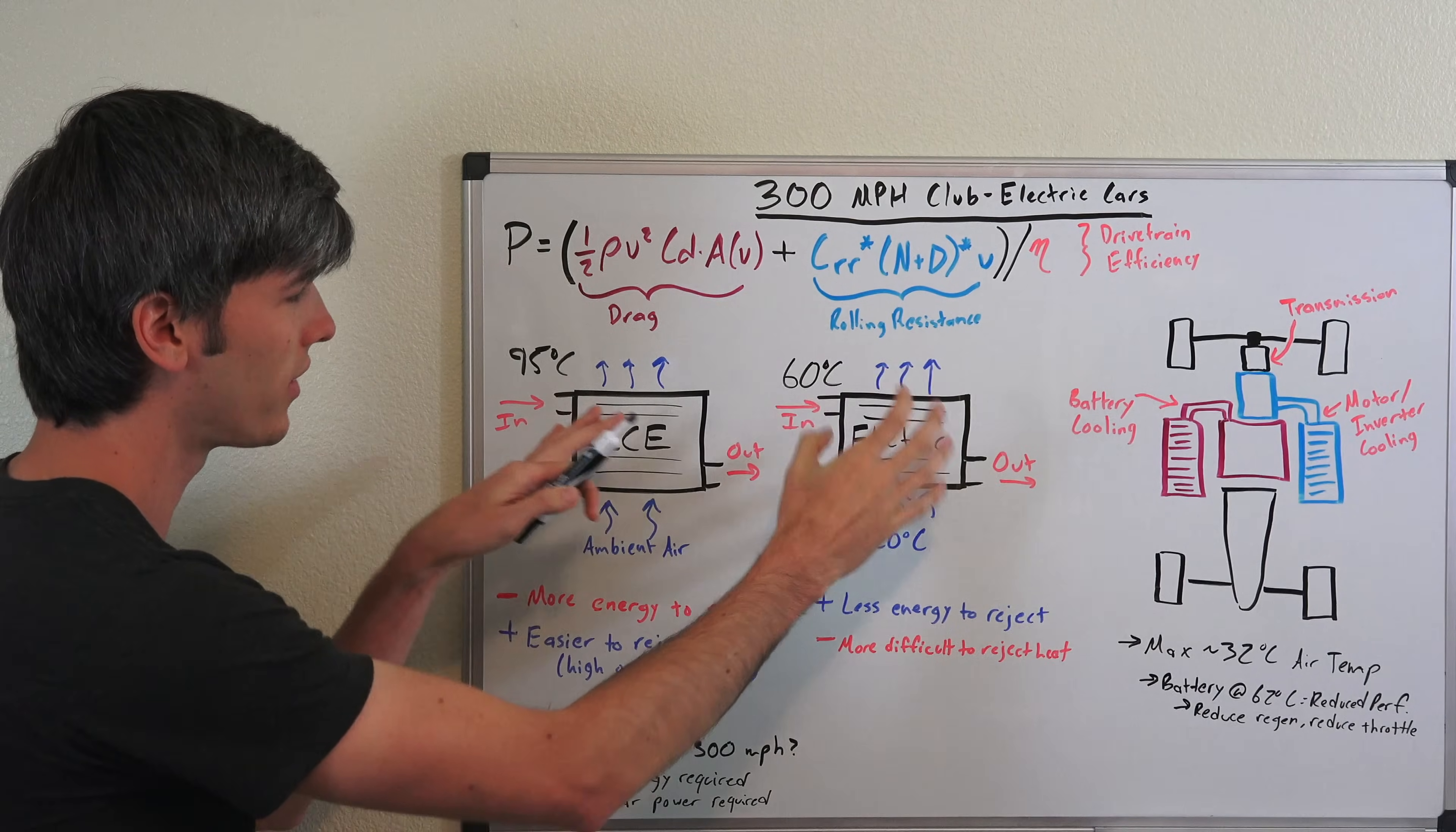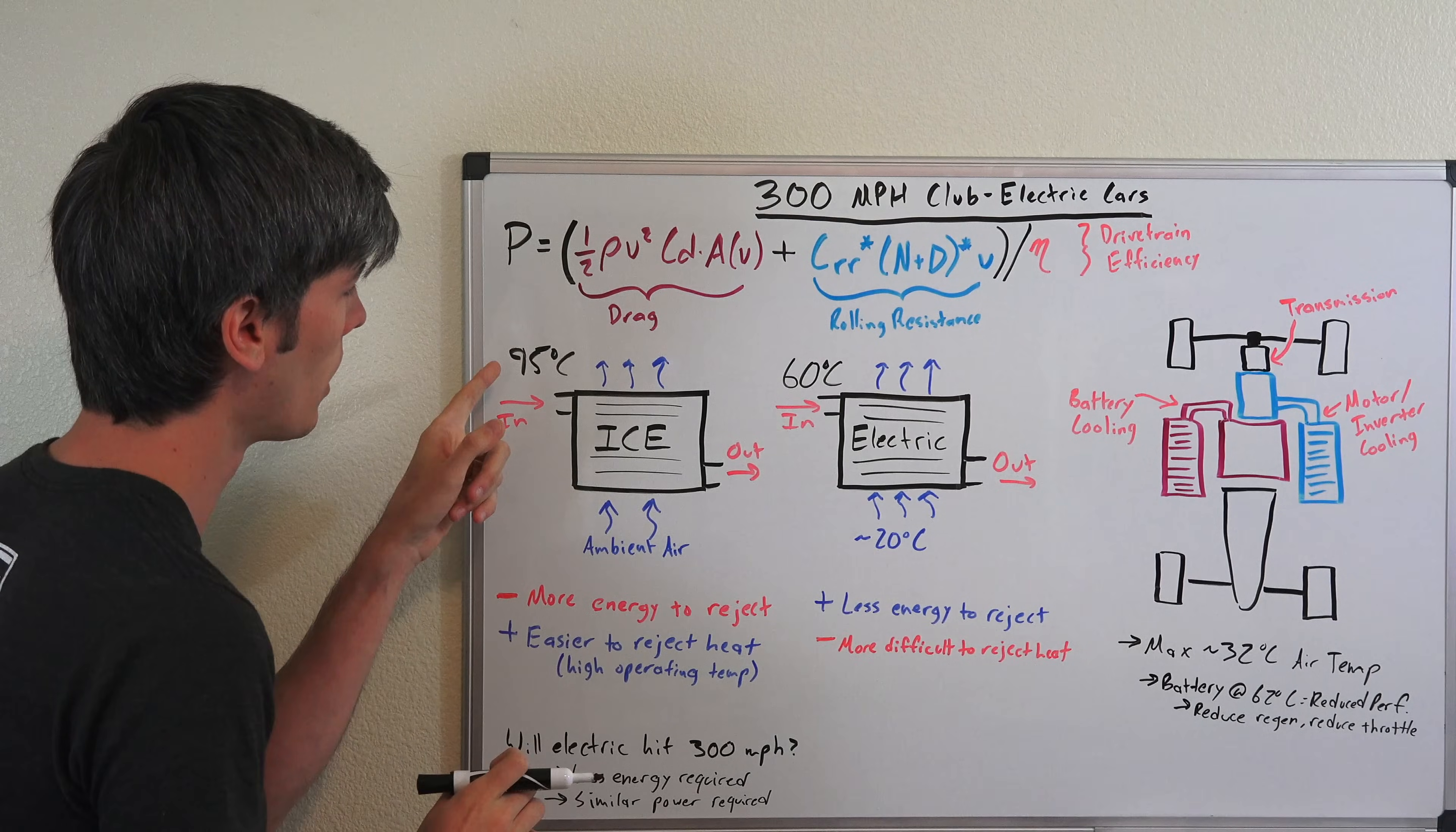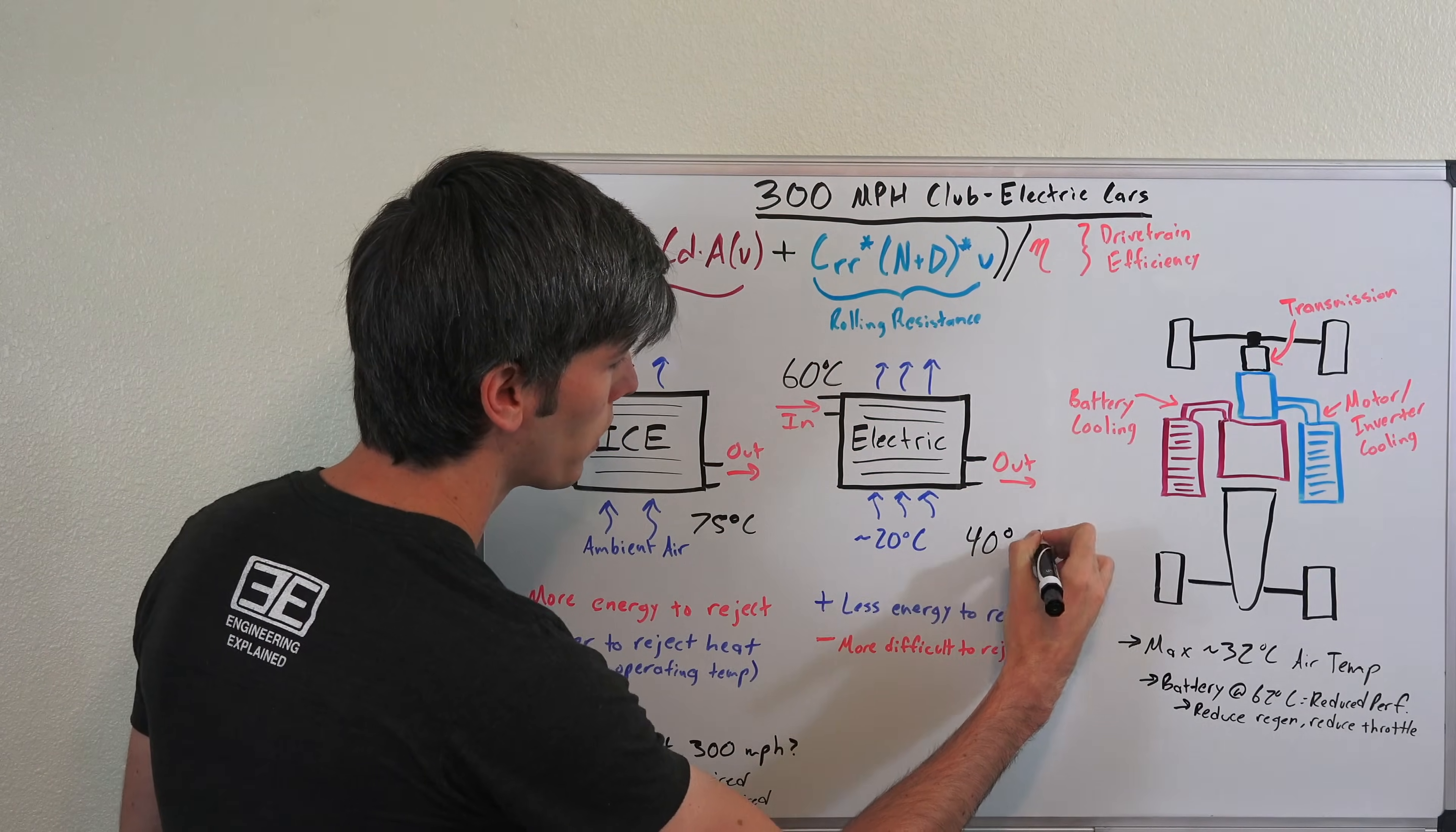Now if we have the same exact size radiator and we have ambient air at 20 degrees Celsius passing through that radiator, you can tell that you're going to reject a lot more heat with this radiator than with this one even though they're exactly the same. And the reason being is because your temperature differential between your inlet coolant, which is 95, versus your ambient air, which is 20, so about 75 degrees Celsius here, versus 60 going in the inlet for your electric vehicle, 20 degrees Celsius ambient air means you only have a temperature delta of 40 degrees Celsius.